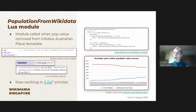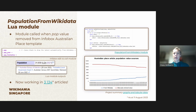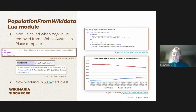The way we've set it up is that the module is only called from the template if you manually remove the pop value. This was so we didn't want to automatically override everybody's work and potentially cause a whole lot of mistakes and problems. So at the moment you have to go through and do this manually. But of course this is just a one-time thing, because after that it will always draw the population value from Wikidata and you can always bulk upload. So it is a much more efficient and less error-prone method than manual updating per each article.